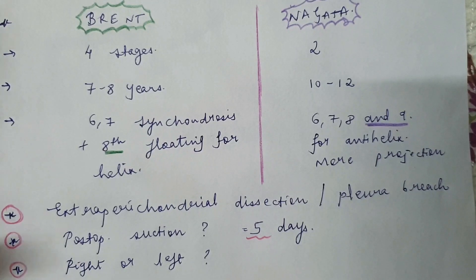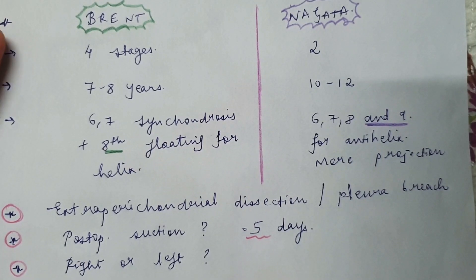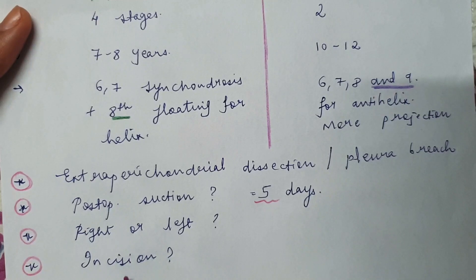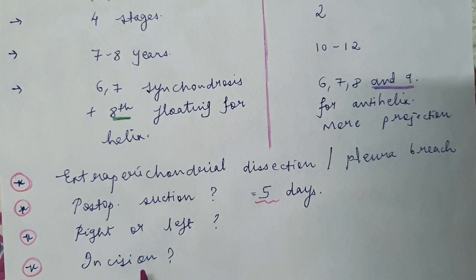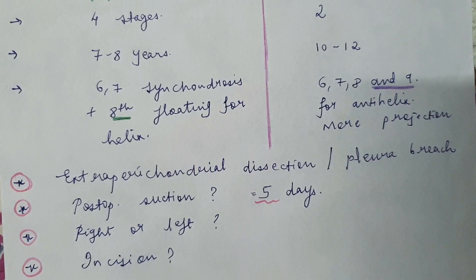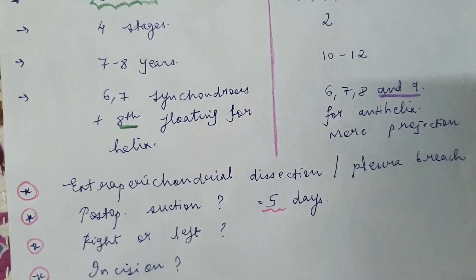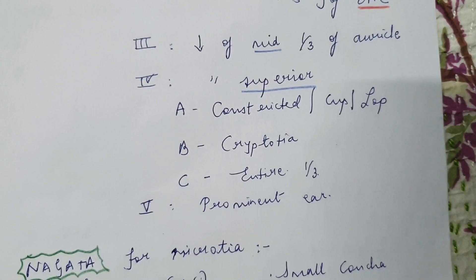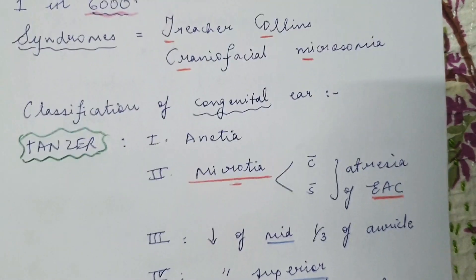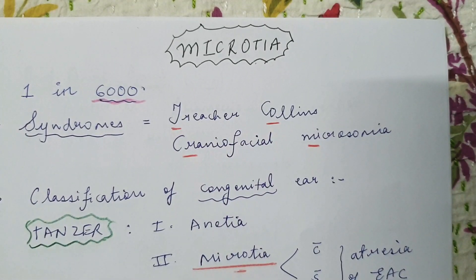The incision used depends on the remnant present. In the lobular type or sausage-shaped variety, an S-shaped incision is made. During the first stage, none of the extra skin is discarded — it is saved for subsequent stages. This concludes the discussion about the theory, and in the next video I will demonstrate how to make the template for microtia.